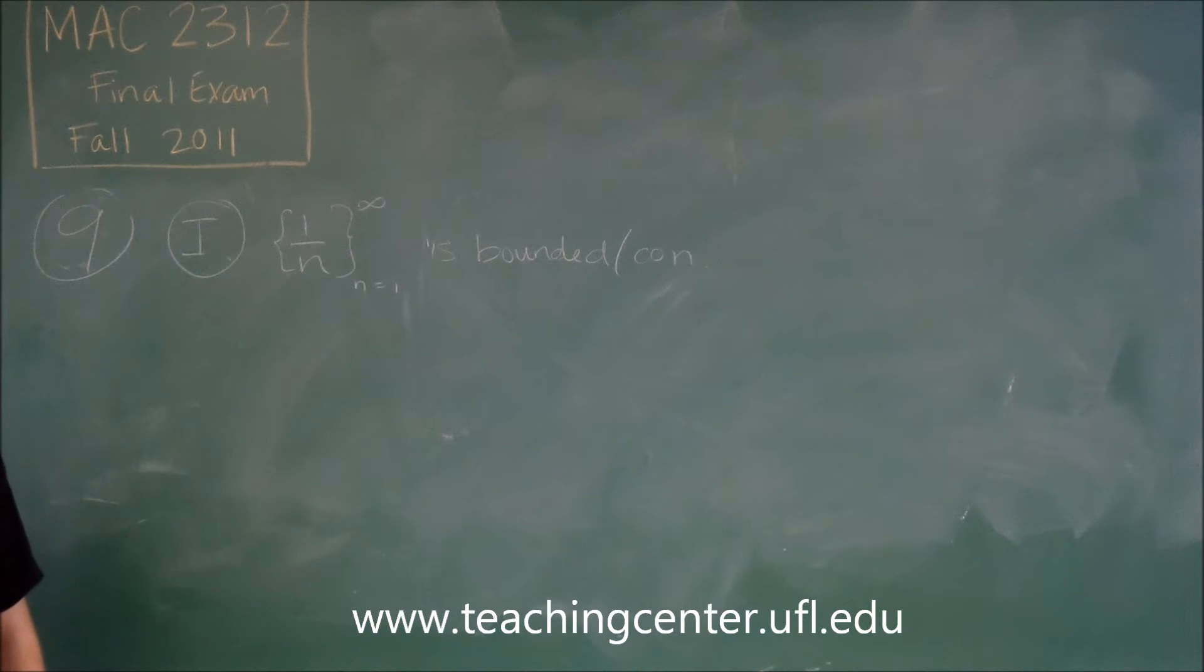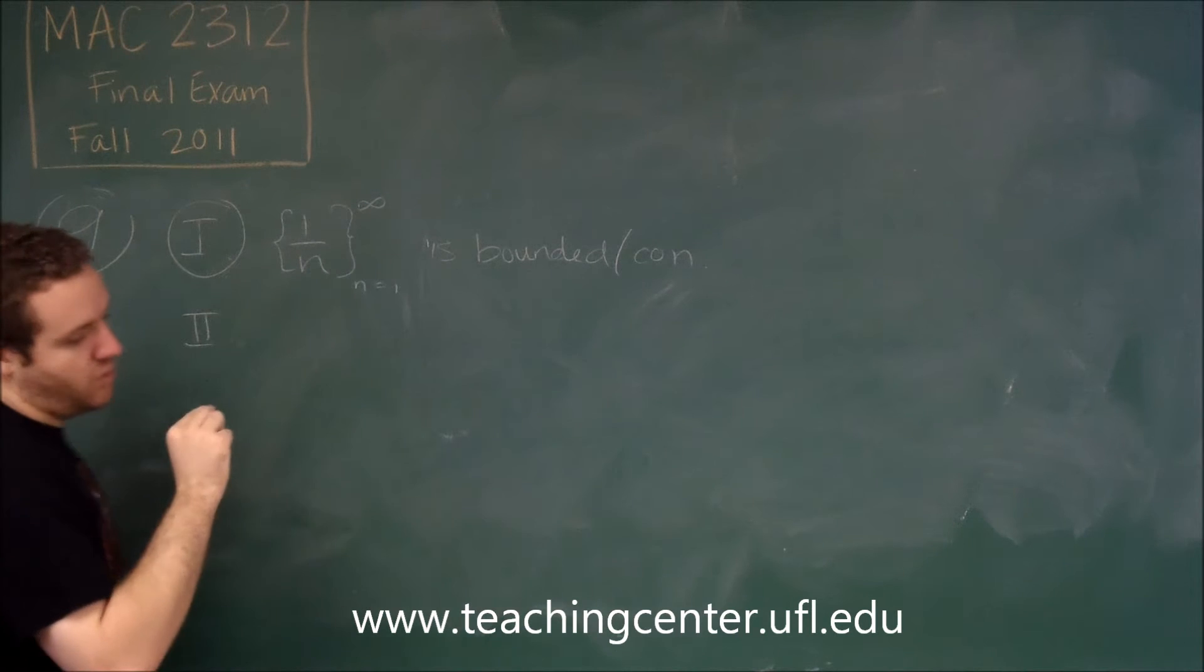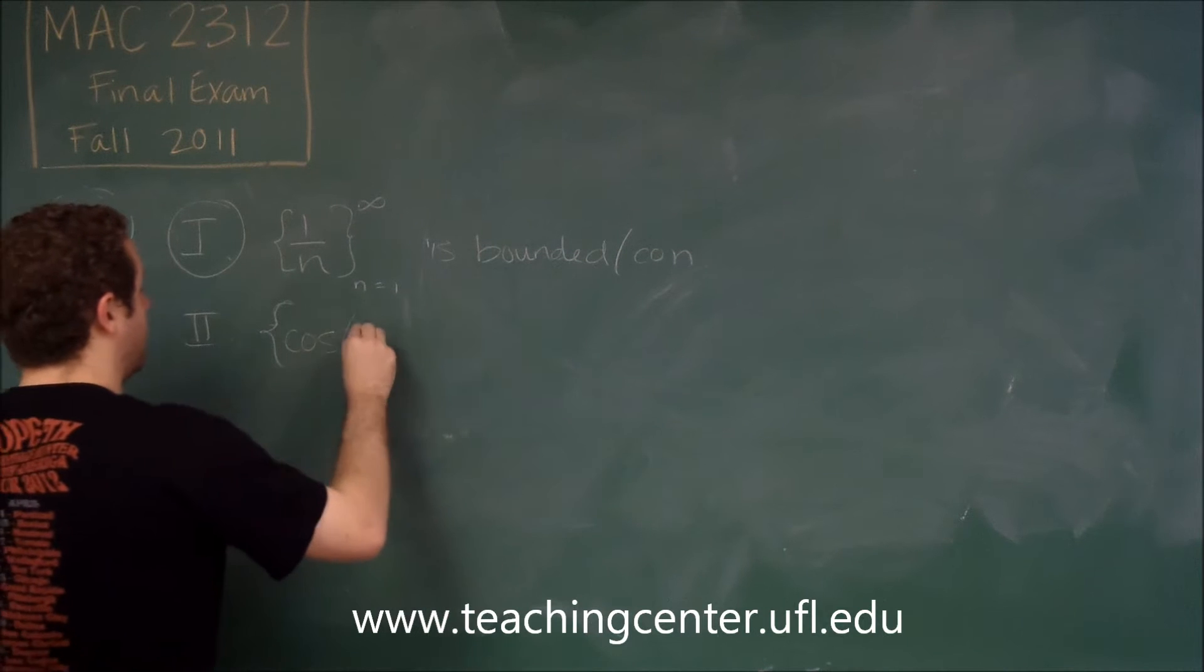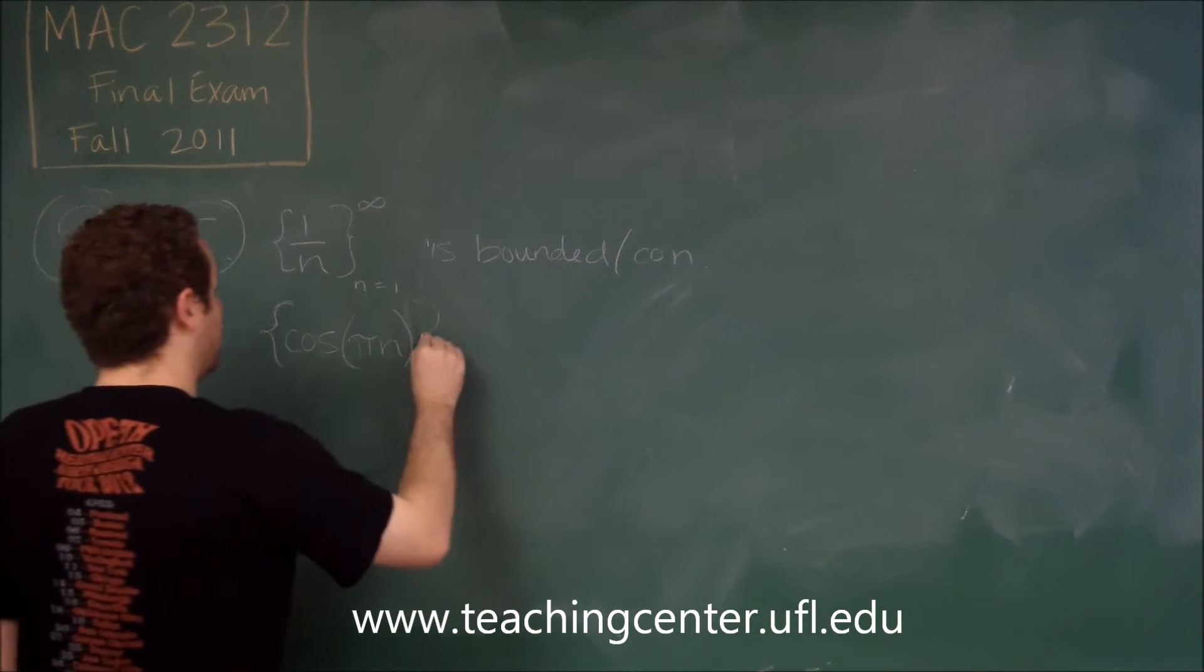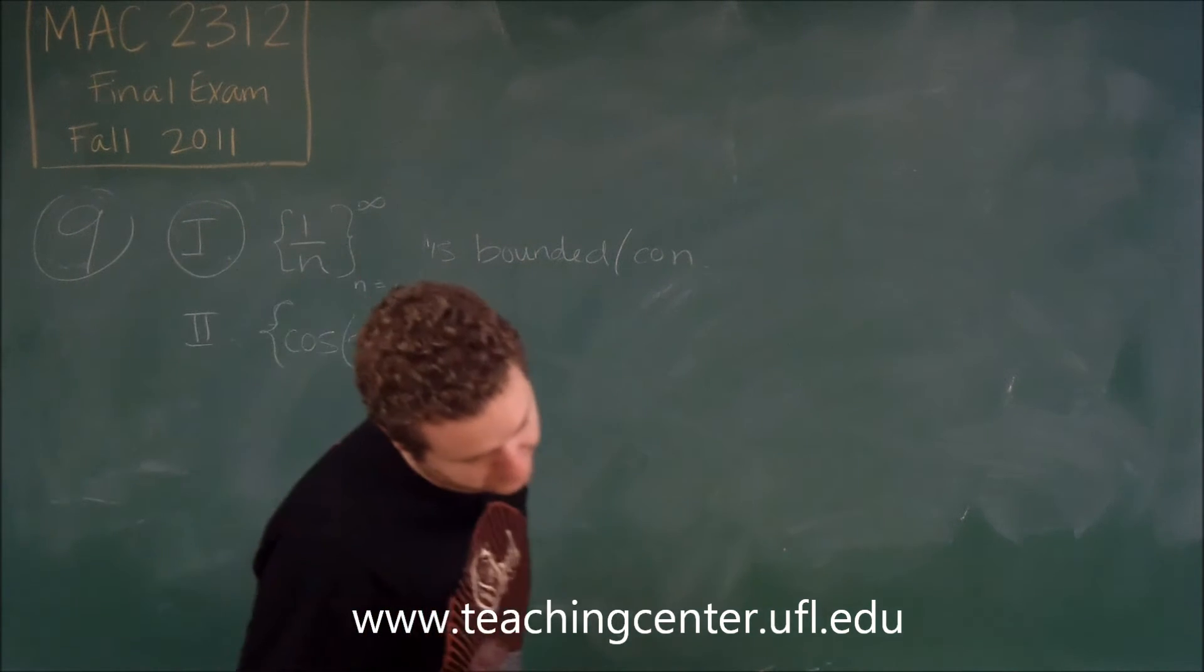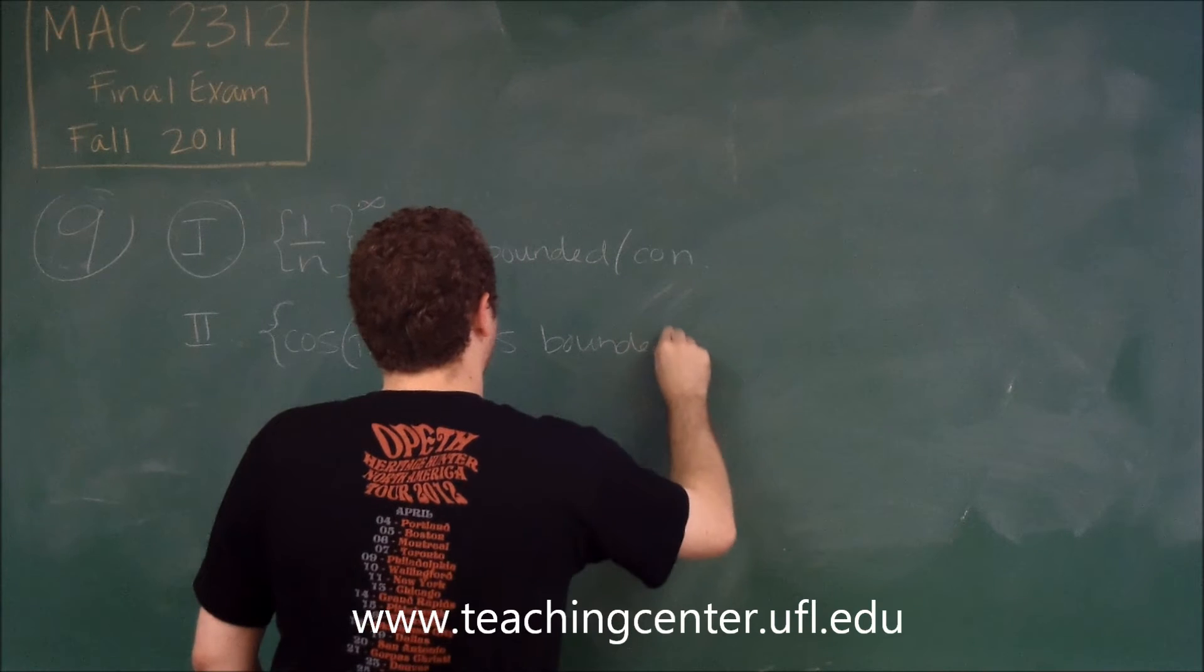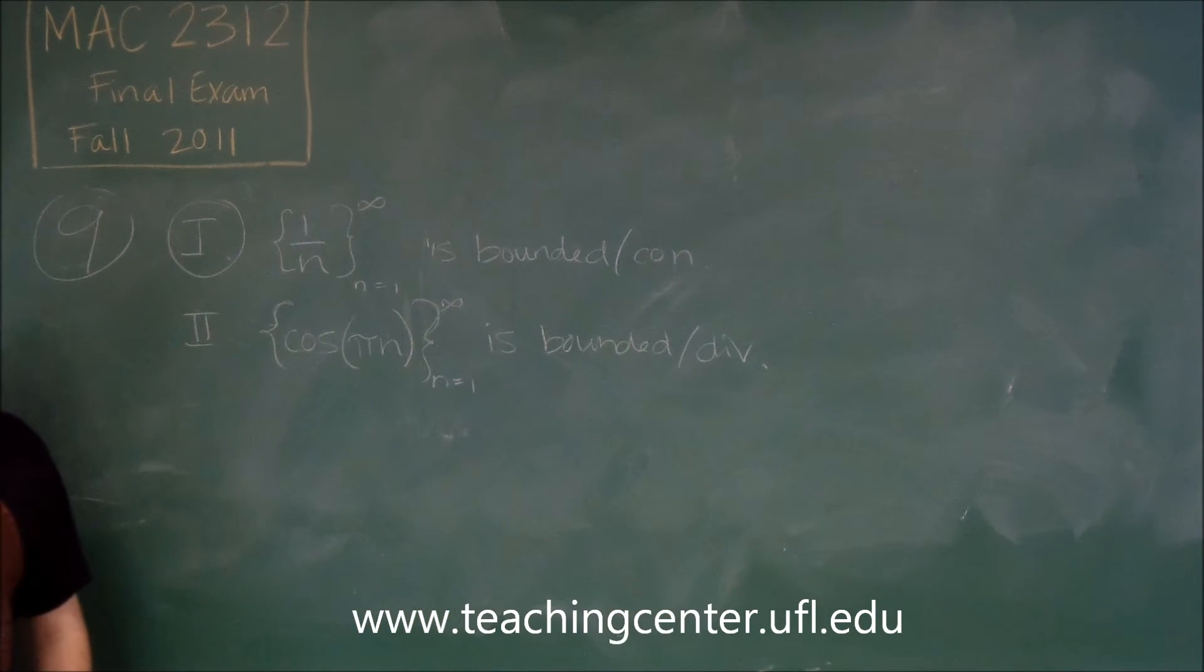The difference between bounded and convergence is going to come to light in the next one. For number two, we have the sequence cosine of pi n from n equals one to infinity. Again, that one says is bounded and divergent. So, let's think about this here.